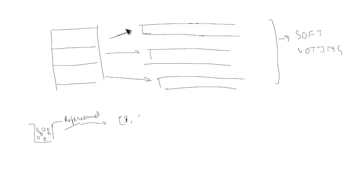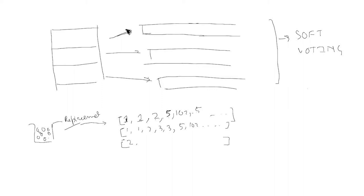With replacement: you choose row one, put it back, then might choose row one again, then row two, then five, then one hundred and two, then perhaps five again — because once you chose row five you put it back. Across multiple splits, you repeat this process. In the second split you might get one, one again, two, three, three again, five, and so on.